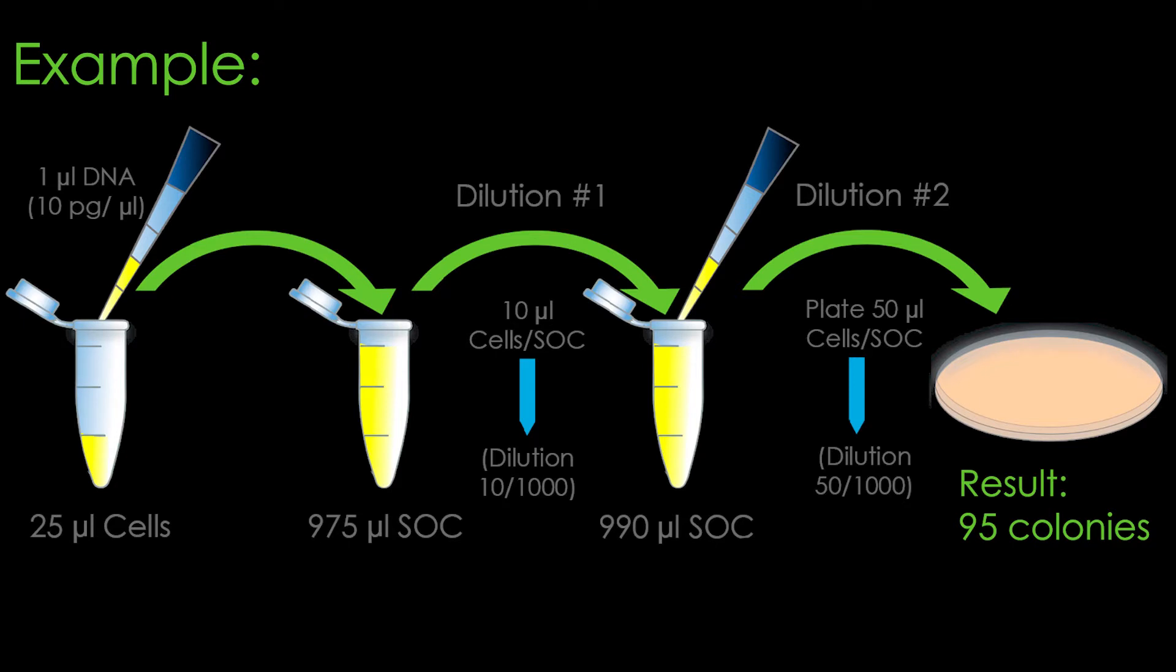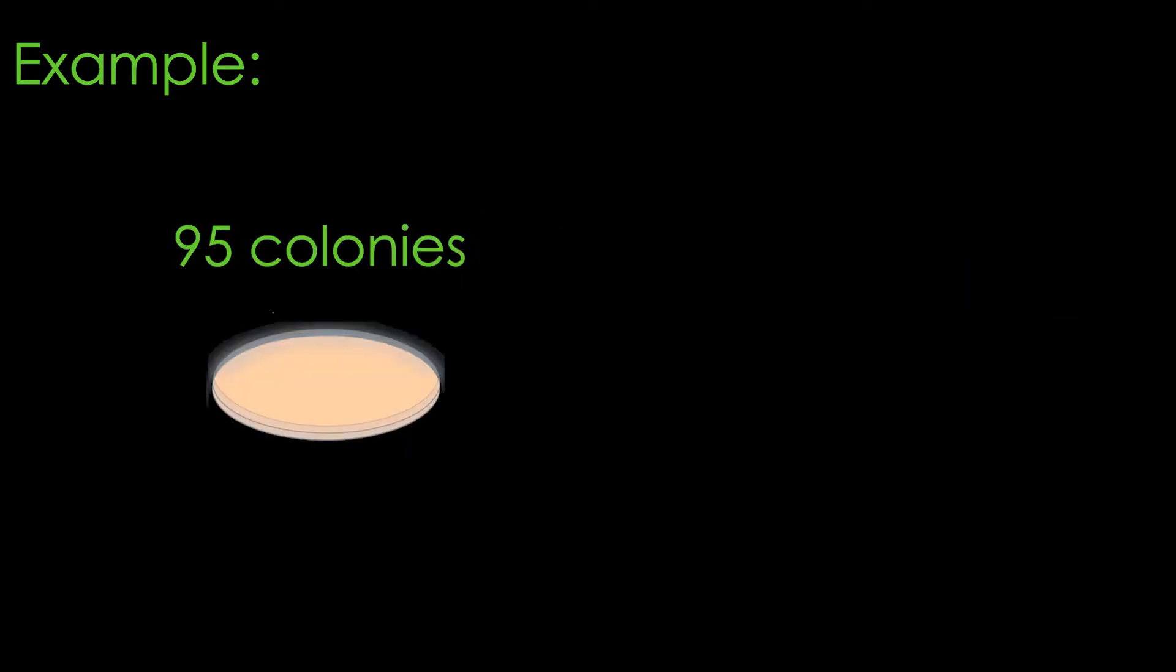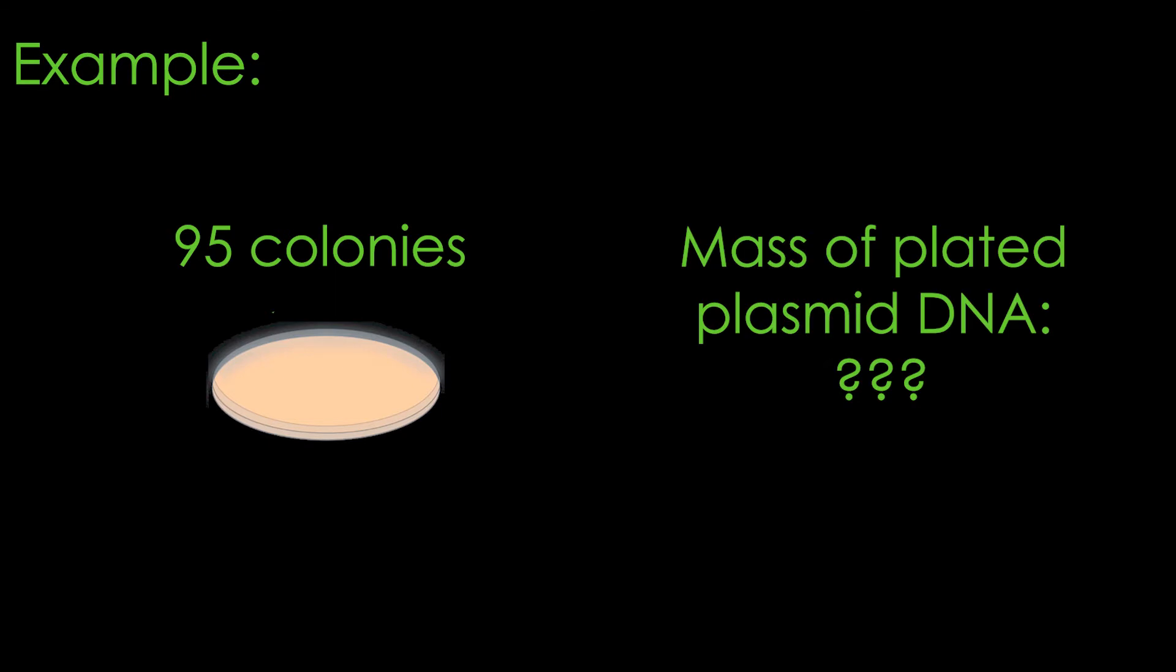So we know our colony count, that's 95 colonies. But what we don't know is the mass of plated plasmid DNA. And to get that, we're going to have to do a few easy steps. The first thing I like to do though, is break things down into two components. I like to break things down into my knowns and my unknowns.